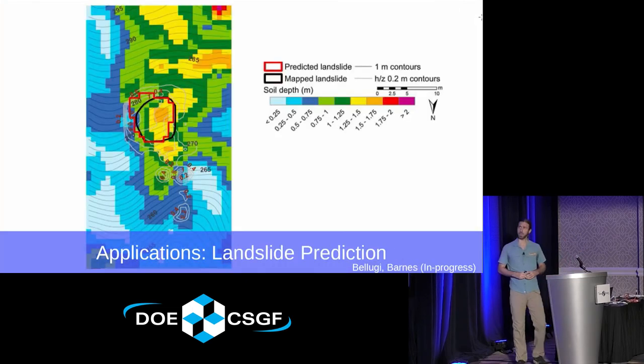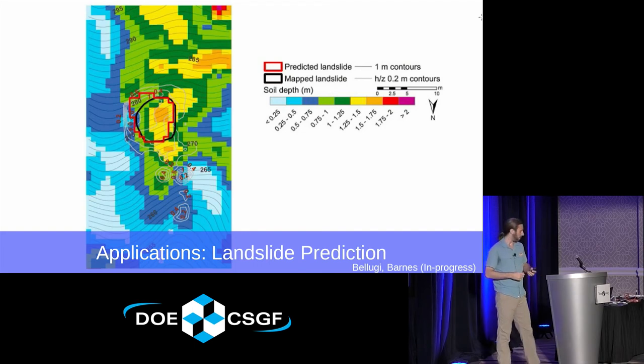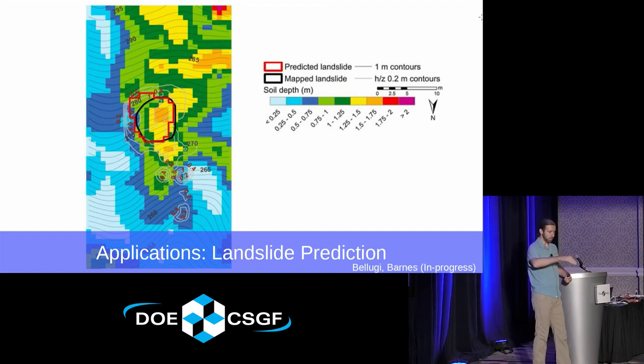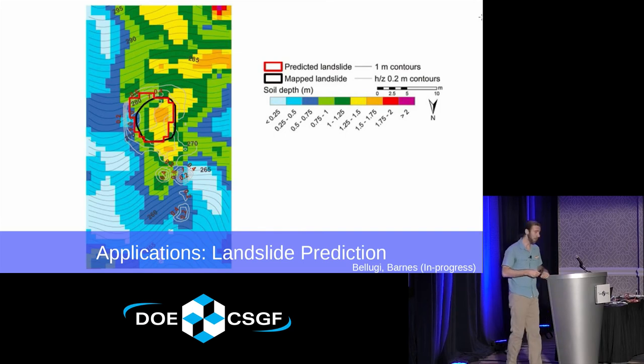Another application, landslide prediction. In order to calculate where landslides are, you have like forces that are pushing soil down slope. You have resistive forces. There's an optimization problem here. Which collection of cells collectively has enough force to fail? Once you know where the water is, you can start to talk about that. It turns out it's an NP-hard problem, but there's a continuous relaxation. So that's also solvable.